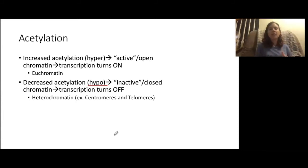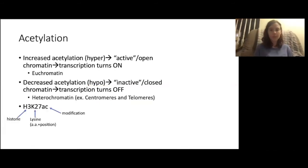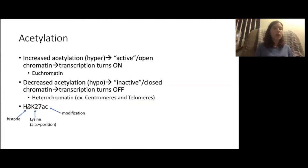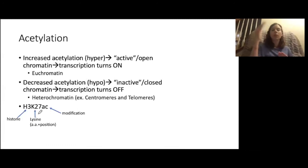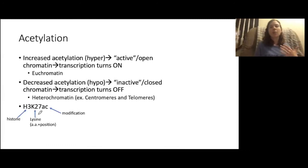Normally you will see histones and their modifications written like this: first you'll have whatever the histone protein is — in this example, H3 — followed by the amino acid in single letter code, so K for lysine, and the position, in this case 27, meaning the 27th amino acid. Then the modification that was added is last — in this case, acetylation. So the full notation would be H3K27ac.